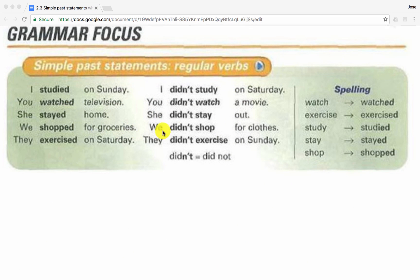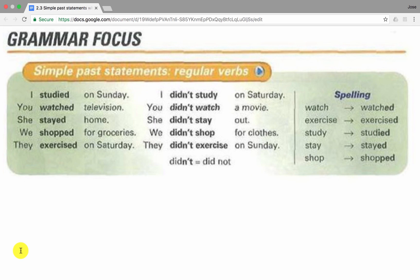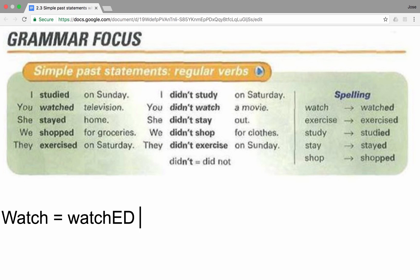Let's analyze the examples on the chart now. I would like to get started with positive statements. Before I start though, I would like to point out the verbs towards the right-hand side of the chart. When talking about the past and if we are using regular verbs, we will follow a quite simple rule: we need to change the verbs to the past tense, and we can do this by simply adding E-D. For example, the verb 'watch' — we will change it to the past by simply adding E-D. On a different class, we'll learn how to pronounce these verbs and also the spelling rules.